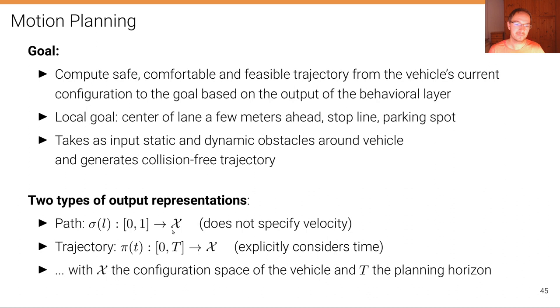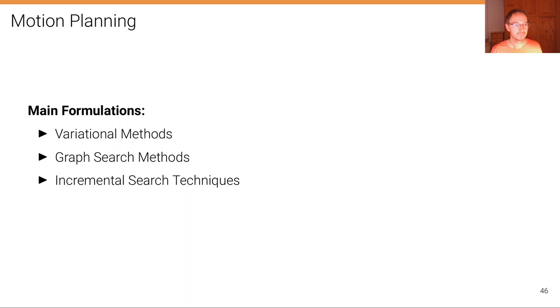In the case of a path, the controller itself must provide the logic for specifying the correct velocity. In this case here, capital T is called the planning horizon and calligraphic x is the configuration space of the vehicle, for example the location of the vehicle and the heading of the vehicle in the simplest case.